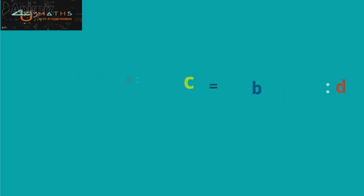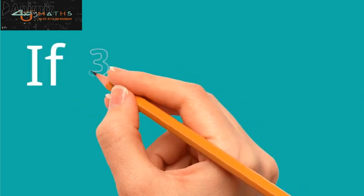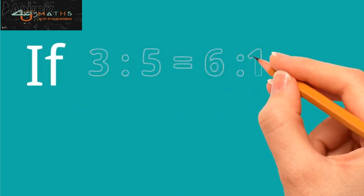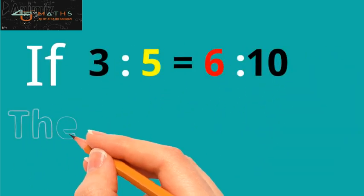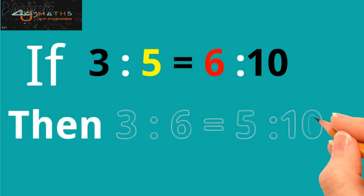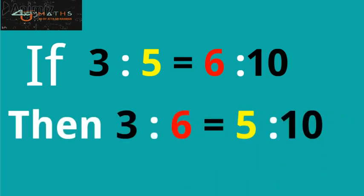For example, if 3:5 is equal to 6:10, then 3:6 will equal 5:10. That is, both give the same answer.